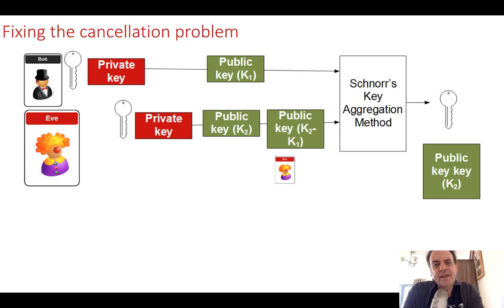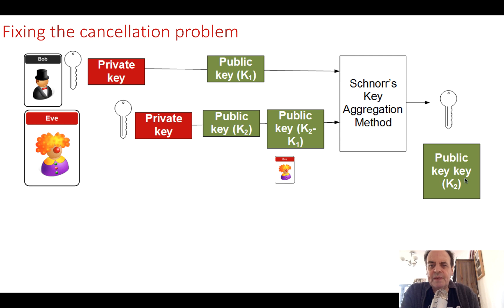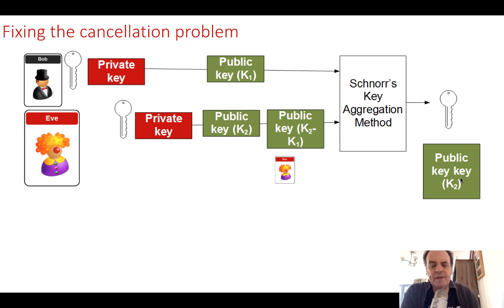One of the problems in the past has been that it's possible for Eve to create her own key using this method. If Bob and Eve are both part of a transaction, Eve might broadcast Bob's key and then her key minus Bob's key, so when the two keys are added together it gives Eve's key — meaning anything related to the transaction would be associated with Eve. Luckily, a new method has been proposed that allows hashing of the keys so they can be verified when they're actually created.